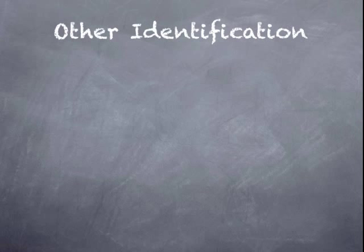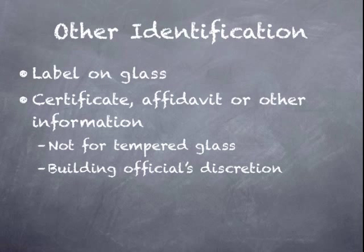There are other ways to identify it, like a label on the glass. For example, fireplaces may be near a bathtub, and the face of the glass of a gas fireplace would have to be safety glazed, but a big etching on it would not be very attractive. So a label could be applied to the glass showing that it is tempered — the label can only be removed if it's destroyed upon removal. Another option would be a certificate, affidavit, or other information to show the building official that what is in place is safety glazing and meets the standards. This is not allowed for tempered glass, but for products like the security film, it is. So perhaps what we found in that Google search could be brought to the building official to approve the safety glazing method.